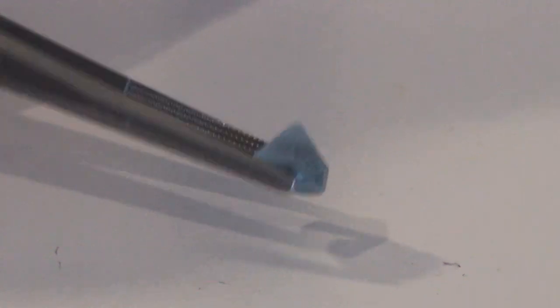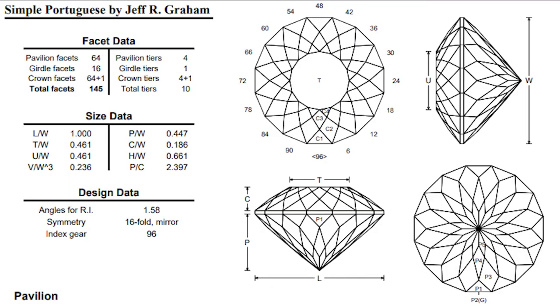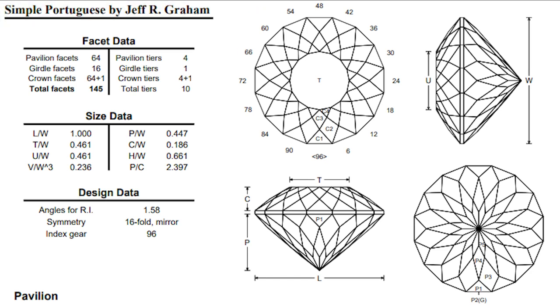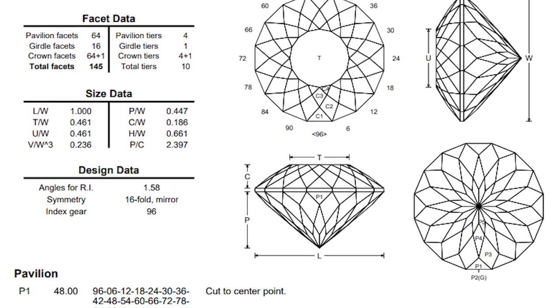So I'll go ahead and just dop this up and cut a Portuguese cut. Since this gemstone is already preformed into a round design, I will use my favorite round design, a Portuguese design, to cut it. For a Portuguese design, I used a design by the late Jeff Graham that he called Simple Portuguese. Simple because he designed it for smaller stones and removed one row of facets, which you don't really need for smaller stones.